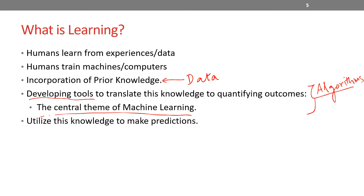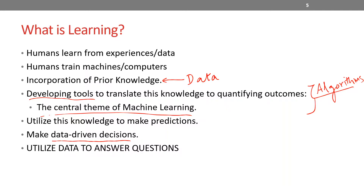We can utilize this knowledge to make predictions. Just like the child was able to identify that this is a car based on past data or past experiences, we are able to make data-driven decisions. Based on prior knowledge, the child was able to predict that a tree is not a car, or recognize what a car looks like. If we expose the child to a new model of a car, the child is usually able to recognize that yes, it is a car. In summary, if we are able to utilize data to answer questions, that's pretty much what machine learning is.